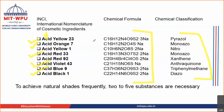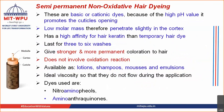Moving to the next type of hair dyeing system — you have semi-permanent hair dyeing system. These are also non-oxidative. Whereas your temporary hair dyeing system lasts for one shampoo, if you take your semi-permanent hair dyeing system, they last for approximately three to six washes. They are basic in nature — temporary ones are acidic in nature, whereas these are basic in nature, or they are cationic dyes. There are two types: basic dye or cationic dye.